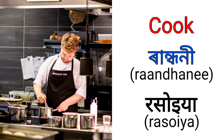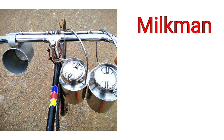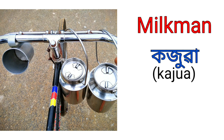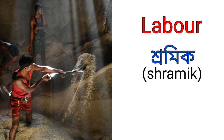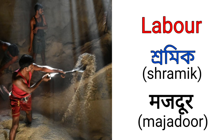Milkman is called Kozua in Assamese and Dudhwala in Hindi. Laborer is called Shramik in Assamese and Mazdur in Hindi.